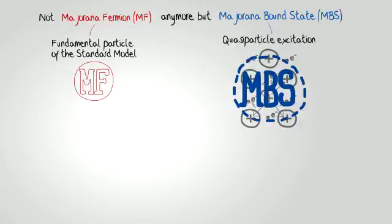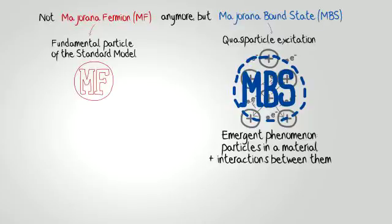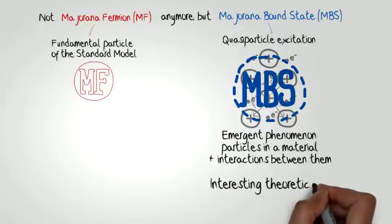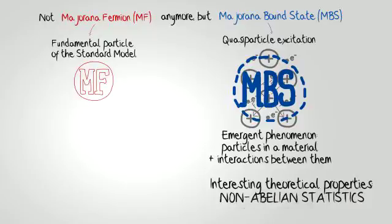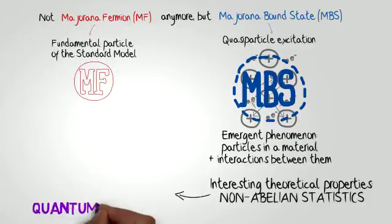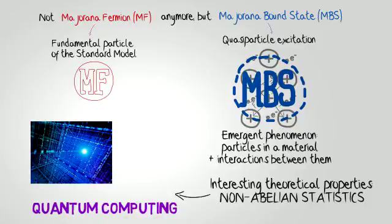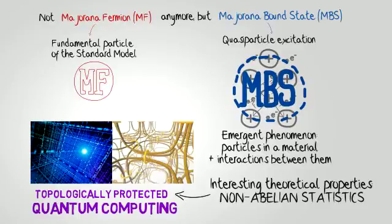There are plenty of interesting theoretical properties of Majoranas. They obey non-Abelian statistics, meaning they can acquire an arbitrary phase when changing positions. This has a direct application to the creation of qubits, and thus to the development of quantum computing. In fact, topologically protected quantum computing. This is what may well bring possibilities up to a whole new level.